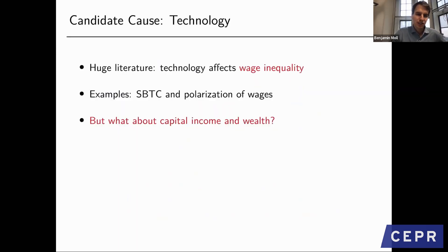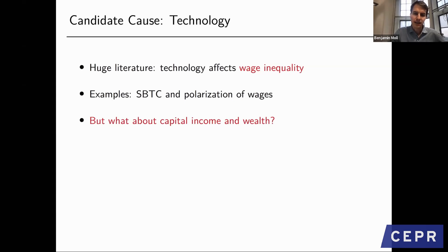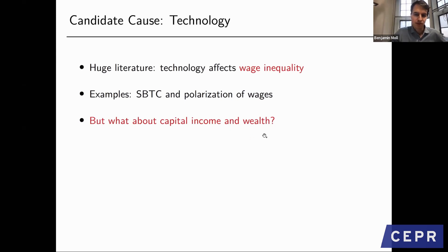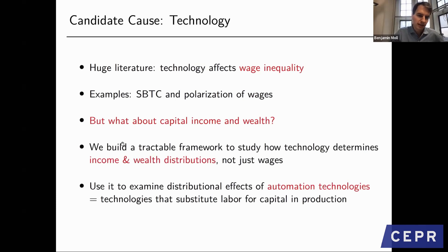Obviously there's a question of where this comes from. There's a huge literature arguing that technological change may affect wage inequality—examples include skill-biased technological change and polarization of wages. But not all income is labor income. Capital income is also important, particularly at the top of the distribution where we've seen the largest increases. And then also wealth, which is ultimately what capital income is derived from.